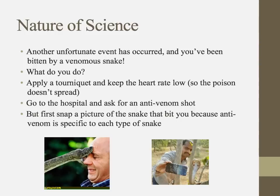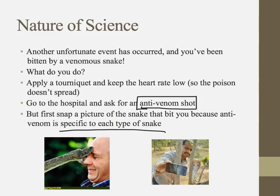If you're bitten by a venomous class pet snake, don't try to suck out the venom — it doesn't work. Apply a tourniquet to tie off the limb, keep your heart rate low so the poison doesn't spread, and go to the hospital. Take a picture of the snake first, because when you ask for anti-venom, they need to know which type of snake it was — anti-venoms are specific to each type of snake. Tourniquet, picture, hospital.